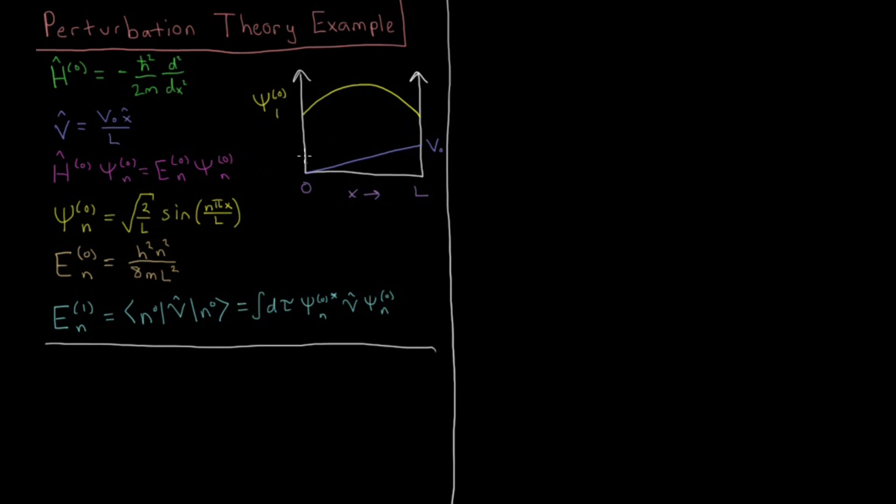But in the particle in a slanted box we have some potential energy which slopes up from the left to the right, going from v equals zero at x equals zero up to v equals v-naught at x equals l. So our perturbation operator is going to be this v-naught x over l.